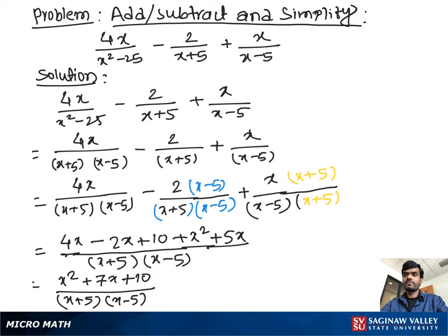Now we do the factor in the numerator part. We can do x plus 5 times x plus 2, over x plus 5 times x minus 5. As you see, x plus 5 and x plus 5 cancel out. So we have left x plus 2 over x minus 5. And this is our answer.